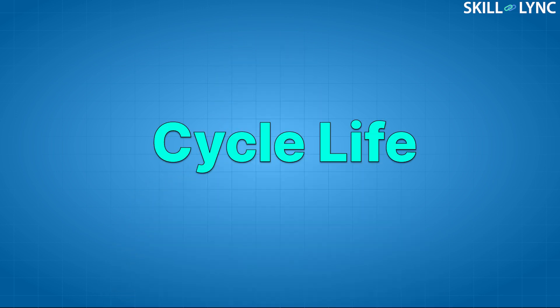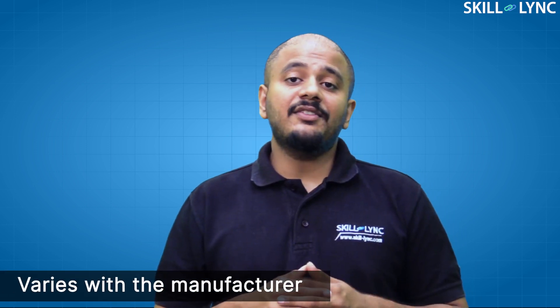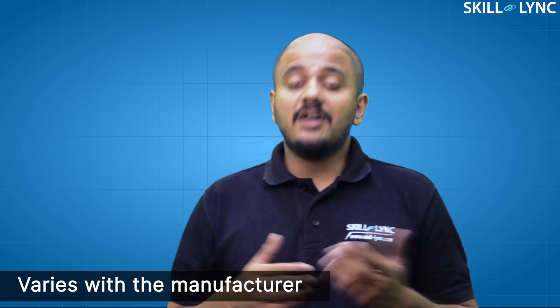The next parameter for comparison is cycle life. Battery life is specified in terms of charge-discharge cycles; one cycle consists of charging the battery to its full level and then discharging it to the minimum permissible lower limit. Lead-acid batteries tend to have a life of around 300 cycles with a depth of discharge of 50 percent. This means by the time the battery undergoes 300 charge cycles, the capacity would be reduced to 50 percent of its original value.